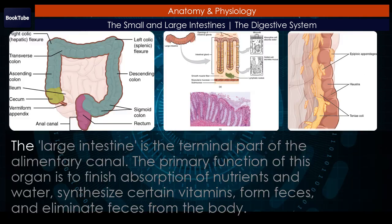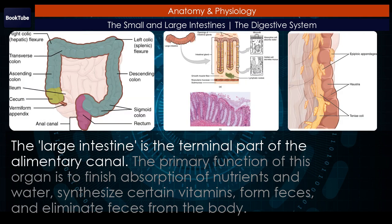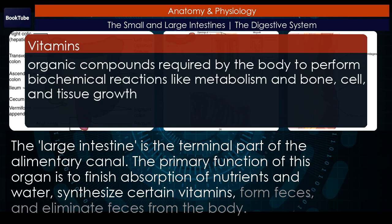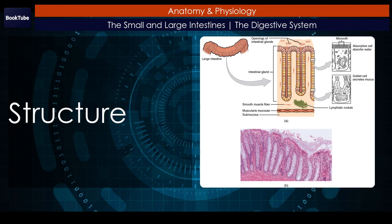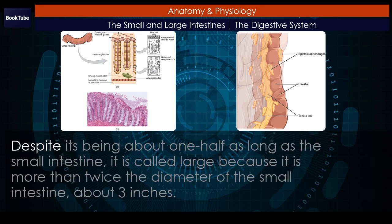The large intestine. The large intestine is the terminal part of the alimentary canal. The primary function of this organ is to finish absorption of nutrients and water, synthesize certain vitamins, form feces, and eliminate feces from the body. The large intestine runs from the appendix to the anus, framing the small intestine on three sides. Despite being about one half as long as the small intestine, it is called large because it is more than twice the diameter — about three inches — of the small intestine.